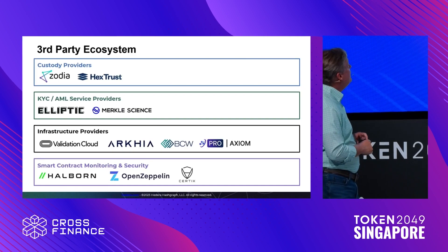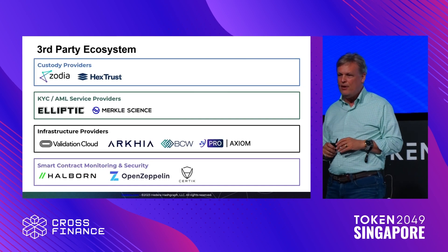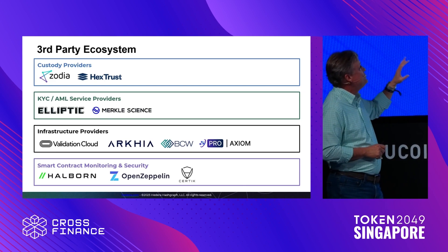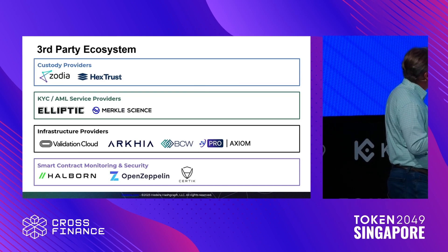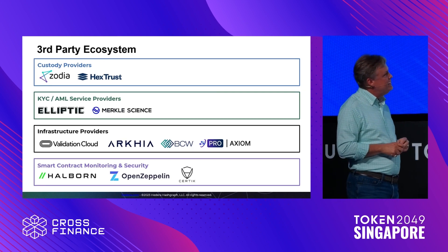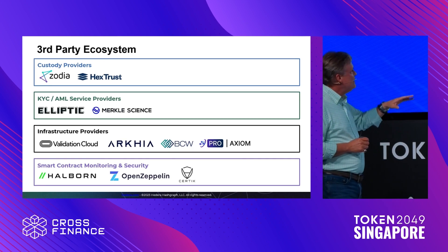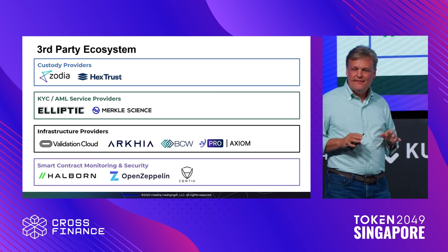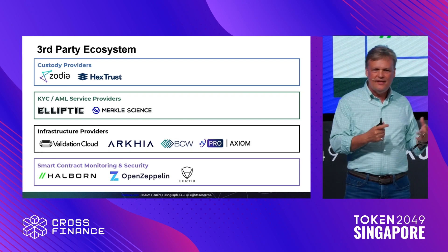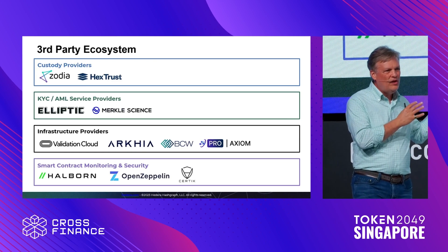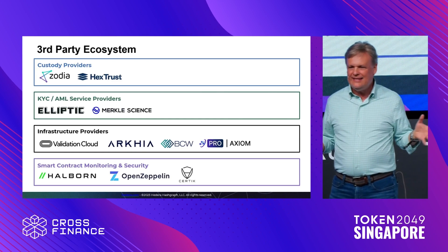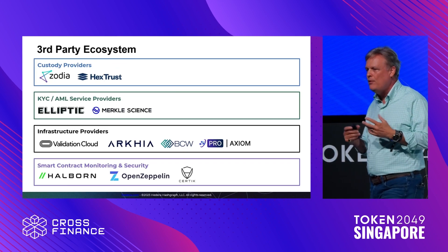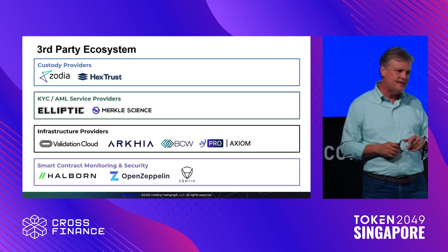Who's involved? Here are the first set of third-party ecosystem partners that are included. For custody providers: Zodiac and Hextrust. KYC and AML service providers: Elliptic, Merkle Science. Infrastructure: Arkea, Validation Cloud, BCW, Axiom. Smart contract monitoring and security: Halborn, OpenZeppelin, Certik. This is the first set — the more users that use this, the more integrations that occur. This is all open source under Apache 2, so as the ecosystem continues to grow, the studio becomes more robust in terms of the integrations that exist in the marketplace.